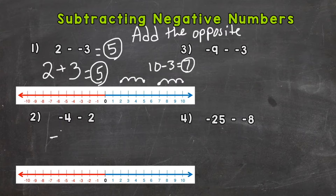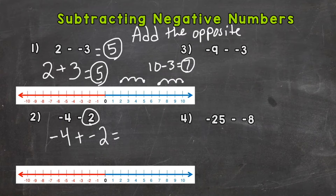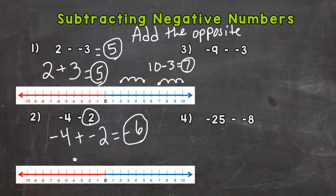For number two, we have negative four minus positive two. Adding the opposite: the opposite of positive two is negative two, so we get negative four plus negative two, which gives us negative six. Let's verify on the number line — we start at negative four, we're subtracting this positive two, so we go to the left: one, two, and we end at negative six. Same answer.